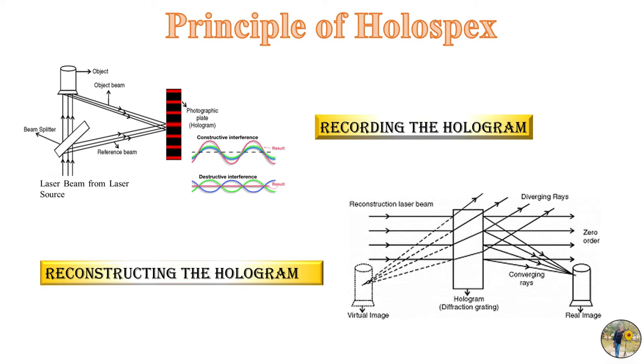So these beams will either interfere with each other in constructive manner or in the destructive manner. Constructive means when crest and trough of both the waves overlap each other it results into the constructive interference.